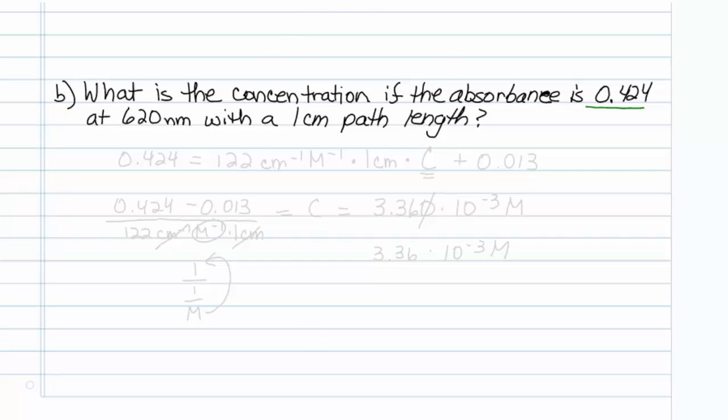The absorbance, 0.424, is equal to epsilon, which is our molar absorptivity with units of centimeter to the minus 1 molar to the minus 1, times our path length, which is 1 centimeter, times our concentration, which is what we're going to solve for, plus the absorbance of the blank, 0.013.